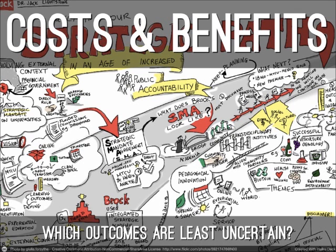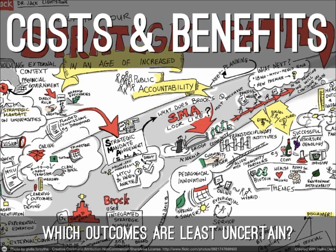You can also flip the question and ask which outcomes are the least uncertain — which are most obviously going to come out the way you would predict, and which give the most predictable positive outcomes, even if they have less long-term or overall strategic benefits. When looking at alternatives, consider whether the uncertainties involve money, the power of rival groups, or the prestige of various persons or organizations — those are the economic, social, and political costs and benefits.